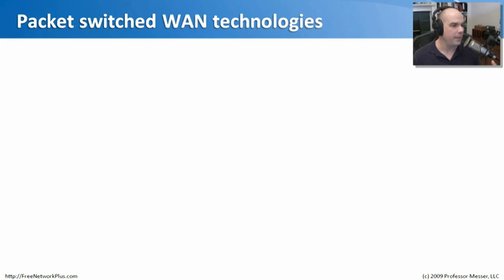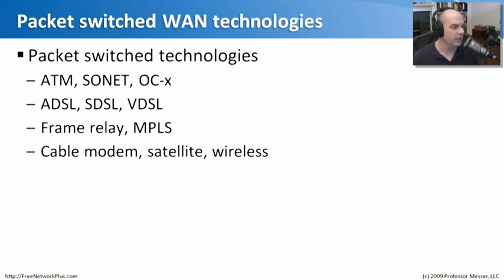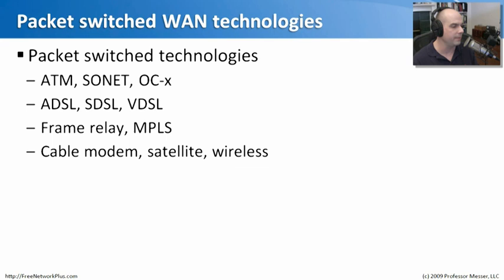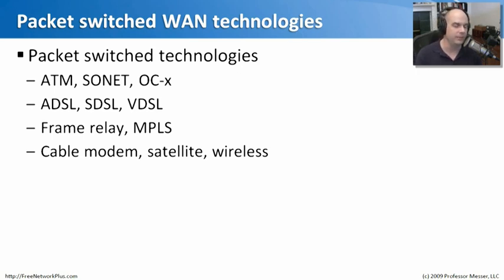We're going to talk about what a packet-switched WAN technology is. There are different kinds: ATM, SONET, and OC3, OC12, OC48 technologies. We'll also talk about DSL technologies — the asymmetric, symmetric, and VDSL flavors. There is a packet-switched technology called Frame Relay, and another called MPLS, which is very common today. And finally, we'll discuss cable modems, satellite, and wireless networks.